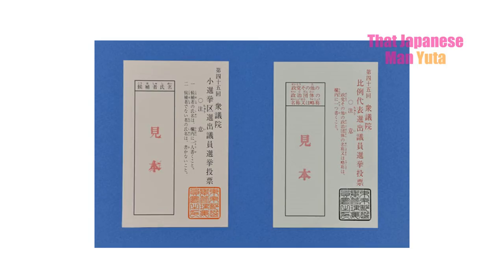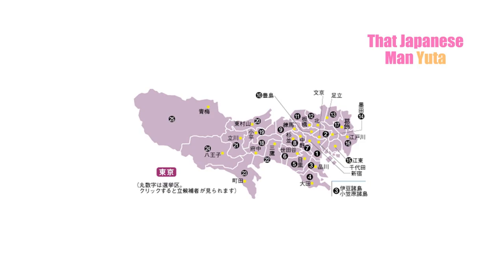How do we vote for the House of Representatives? When you go to a polling place, you will get two pieces of paper. The first one is pretty simple — you choose one candidate from your electoral district. If they win, they win the district.